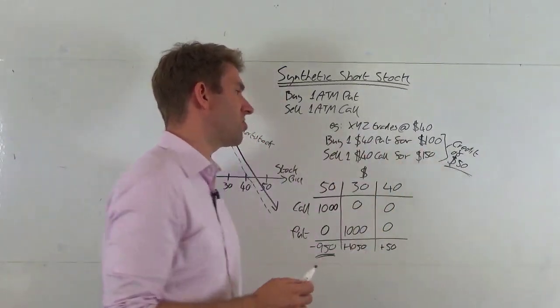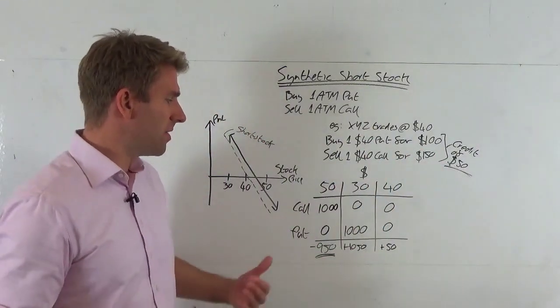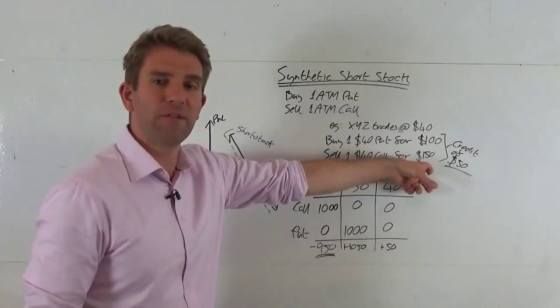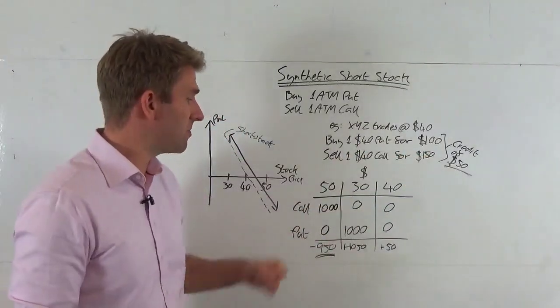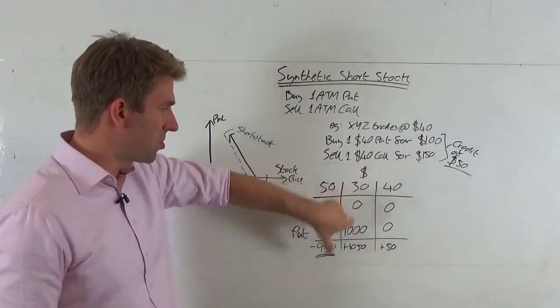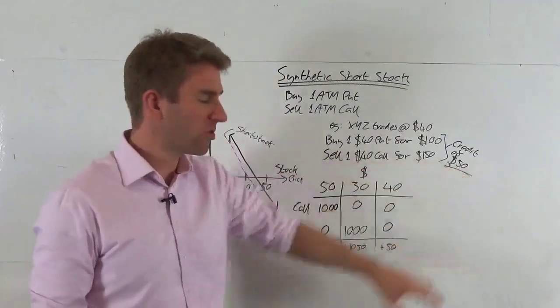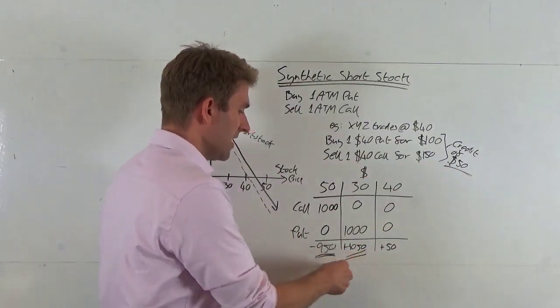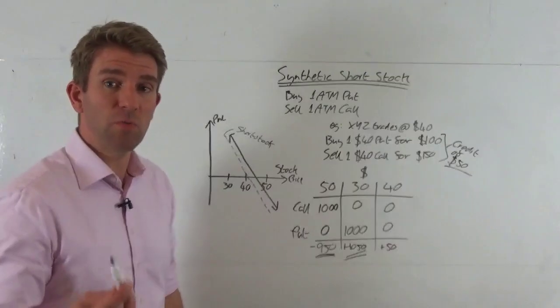We paid $100 for that, so we've only made $900 on that, but we made $150 on the call, so we've made $1050. That makes sense because $1000 is the option value plus the $50 credit, as opposed to only the $1000 we would make if we were net short on the stock.